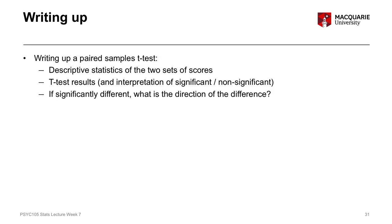The next thing we can talk about is how to write up a paired samples t-test. Very similarly to what I said last week, if we want to write up the results of a t-test, we need a few different things in our summary statement. We need to include the descriptive statistics, particularly of the two different sets of scores — here the baseline variable and the test phase variable. We also need to include the actual results of the t-test itself: the t-statistic, the degrees of freedom, and the p-value. We need a comment about whether it's a significant or non-significant result, and if there is a significant difference, we need to comment on the direction of the difference — which group had the higher score and which had the lower score.